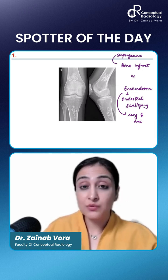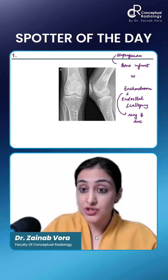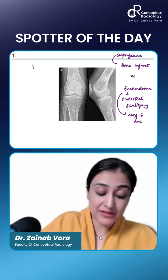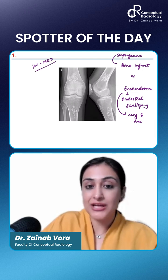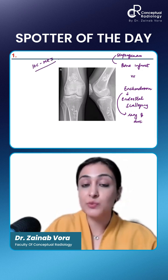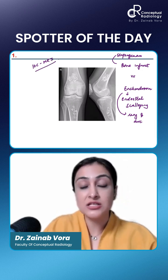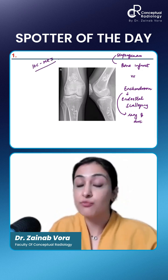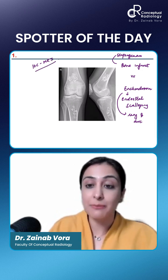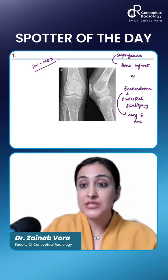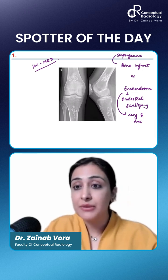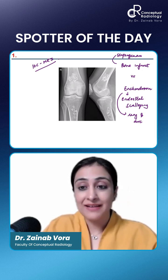What would distinguish it? What would be the investigation of choice here? It would be MRI. Can you tell me what would be the characteristic appearance of bone infarct on MRI? You see the double rim sign.